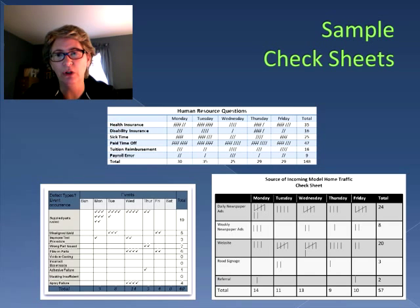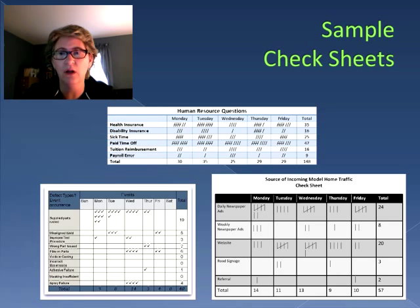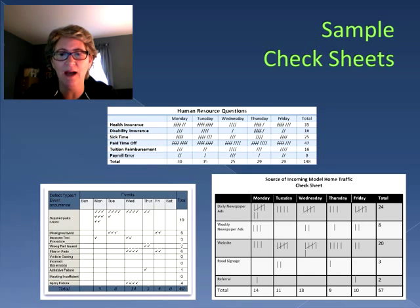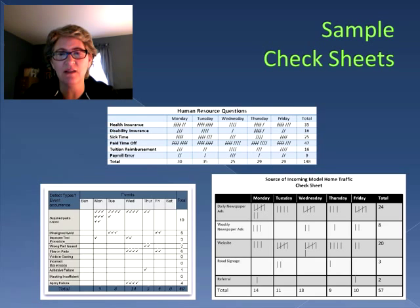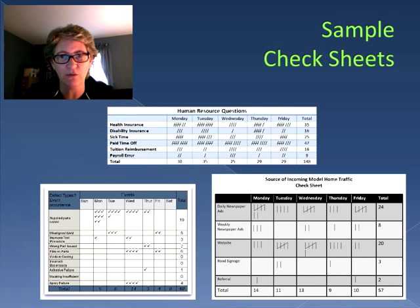Then when we look at another one on the right hand side on the bottom, this one is evaluating the traffic for model homes — what is causing people to come into a model home, whether it's a newspaper ad, a website, road signage, and so forth. So what's happening with the check sheet is that we are collecting information so that we can do a further analysis.